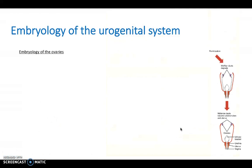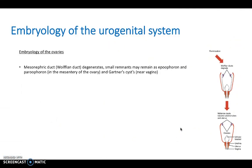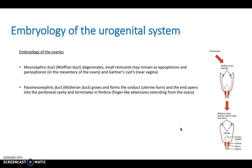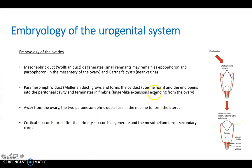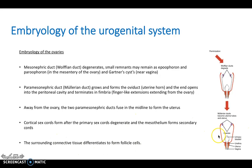For the embryology of the ovaries: the mesonephric or Wolffian duct degenerates and the Müllerian duct predominates, becoming the uterine tubes and uterus. The two paramesonephric ducts fuse in the midline to form the uterus, and the surrounding connective tissue differentiates to form follicular cells, which are characteristic of female feminization development.